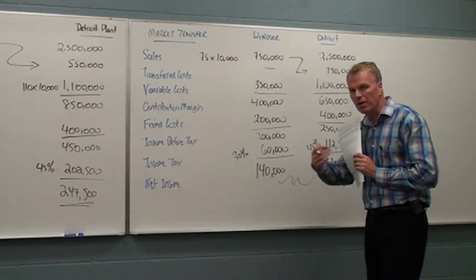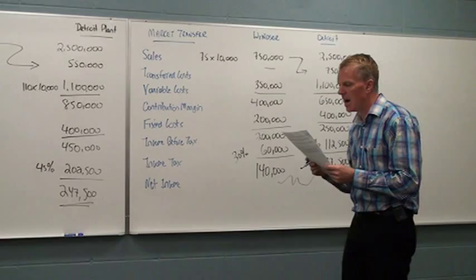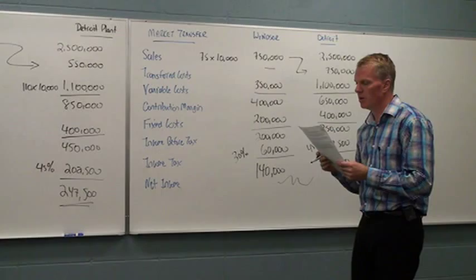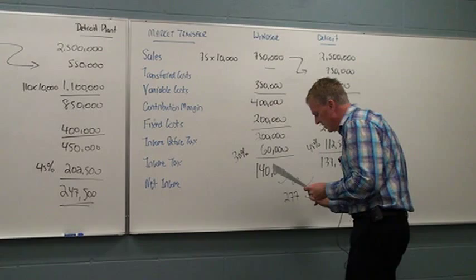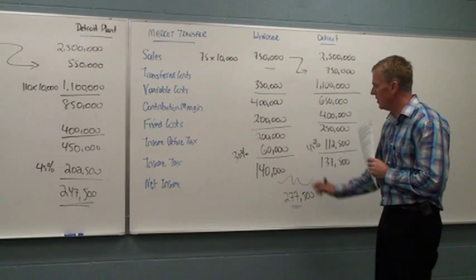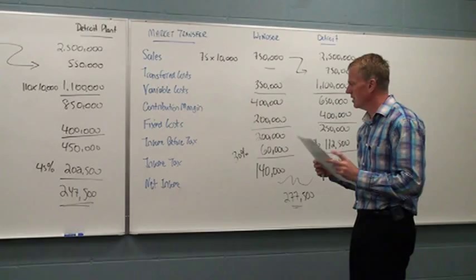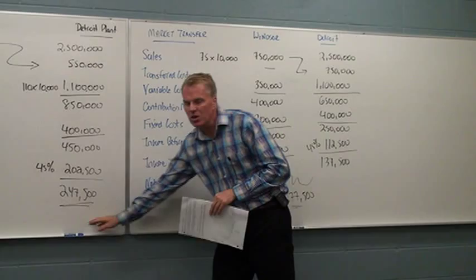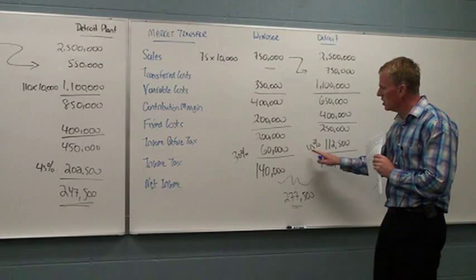Now, again, with transfer pricing, what we are focusing on from an international perspective is the combined effect of both areas. So we want to look at how much we're making from the Windsor plant and the Detroit plant together. We want to look at the overall effect to Fowler Electronics. So when you add these two together, you can see that $277,500 is the benefit. And using the market price for the company Fowler will be better than using the cost method. And why is that? Let's get into the question here a little bit more in depth now. Well, the big reason for that is because of the tax rates. For Windsor, much lower tax rate, 30% versus 45%. You can see there a 15% difference.